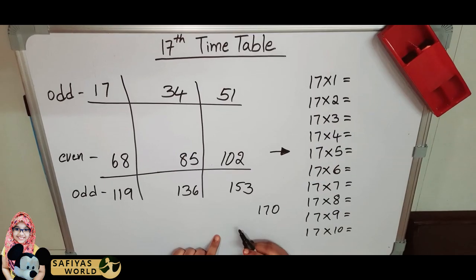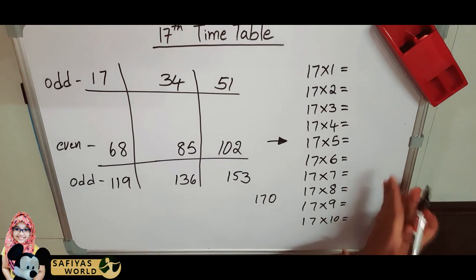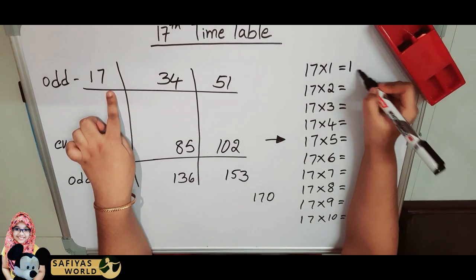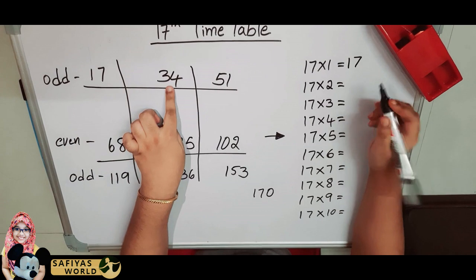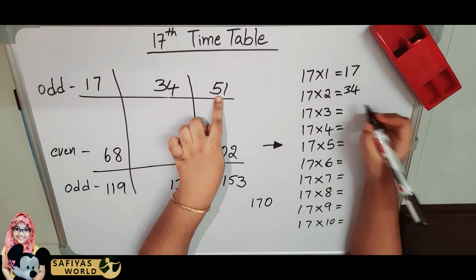Do you understand? Let's transfer here. 17 ones are 17, 17 twos are 34, 17 threes are 51.